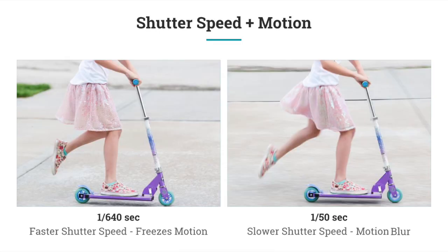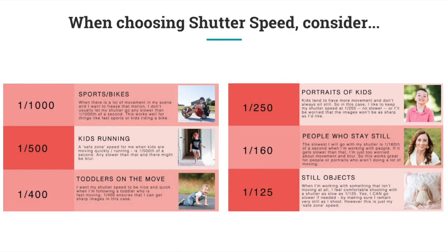Here's another example. The image on the left has a shutter speed of 1/640th of a second, and the image on the right has a shutter speed of 1/50th of a second. In the left image the motion is frozen, while in the right image there's just a little bit of blur — you can see it specifically if you look at the foot.